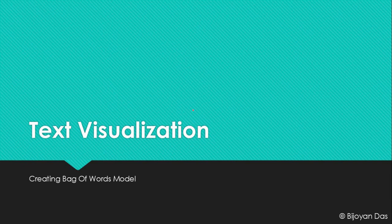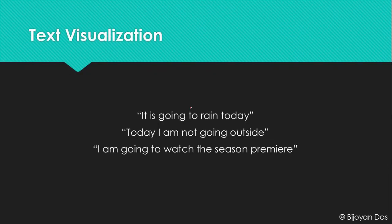In this video we are finally going to get started building our first text representation model, which is the bag of words model. So say we have these three simple sentences: 'it is going to rain today', 'today I'm not going outside', and 'I'm going to watch the season premiere'.